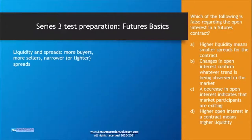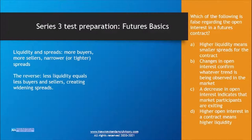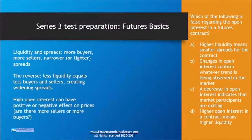On liquidity and spreads — not just in futures but in any market — when there are more buyers or more sellers and therefore higher liquidity, spreads will always narrow. More buyers and more sellers means a narrower or tighter spread. The reverse is also true: less liquidity equals fewer buyers and sellers and therefore a widening spread. High open interest can have either a positive or negative effect on prices, because it depends on whether the open interest is driven by more sellers or more buyers being eager to enter the market.